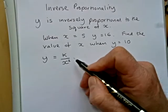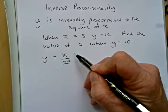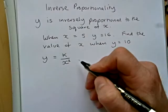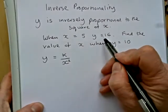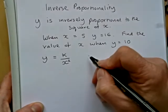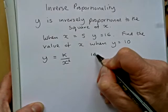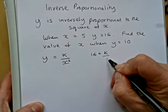If it was simply proportional and not inversely, it would have read y equals kx squared, but we're clearly told it's inversely proportional. So, to find the value of k, we substitute in the given values of x and y. So, we're told that 16 equals k over 5 squared.